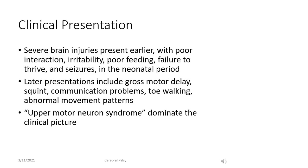The clinical presentation and age of diagnosis of CP depends largely on the severity of the brain insult. In more severely affected infants, there is an earlier presentation in the neonatal period with poor interaction, irritability, poor feeding, and seizures. In infants with less severe insults, the neonatal period may be completely normal, with evidence of motor delay or spasticity seen after one year of age — for example, presenting at one year with toe walking or at 18 months to two years with delayed walking. Squint, communication problems, and abnormal movement patterns may also be seen.